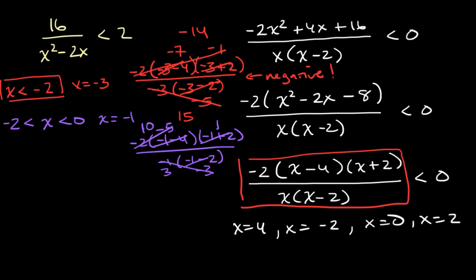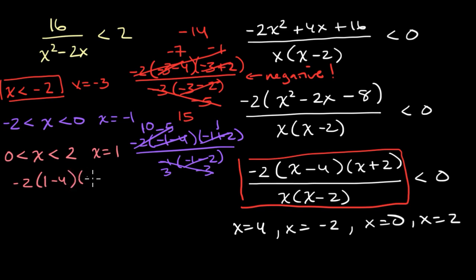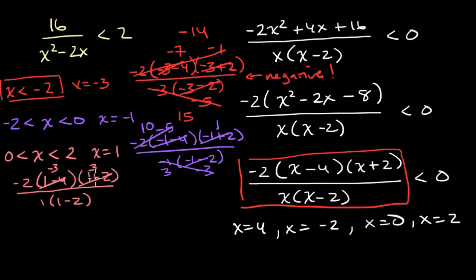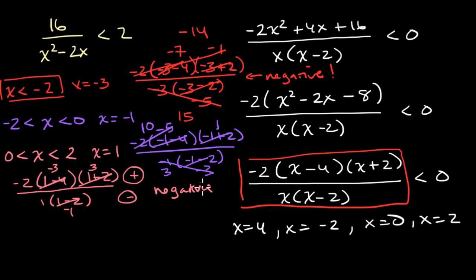Now let's test between zero and two using x equals one. We get negative two times (one minus four) times (one plus two), all over one times (one minus two). The numerator: negative two times negative three times positive three — negative times negative times positive gives a positive numerator. The denominator: one times negative one is negative. So the whole expression is positive over negative, which is negative — less than zero. This interval is also part of our solution set.